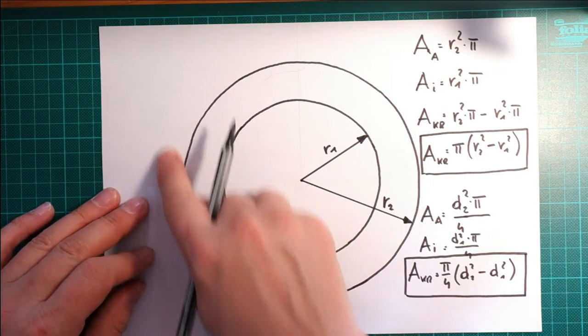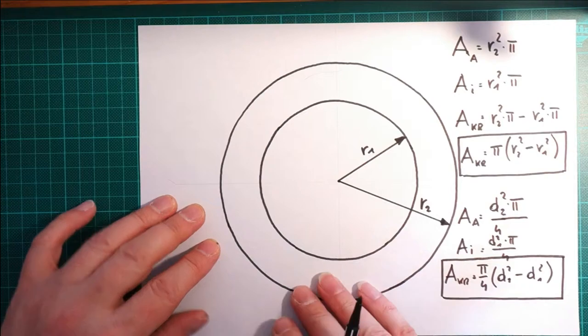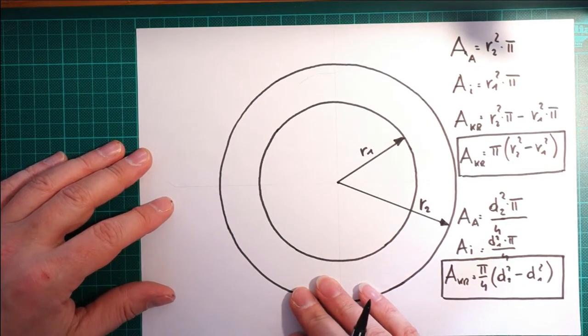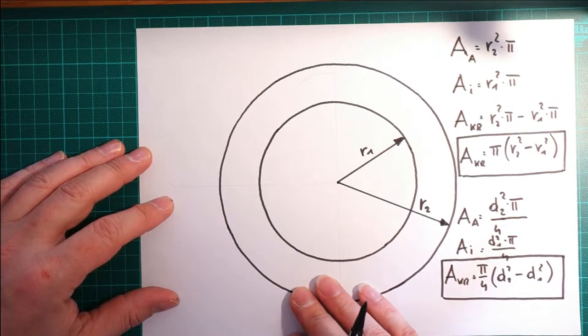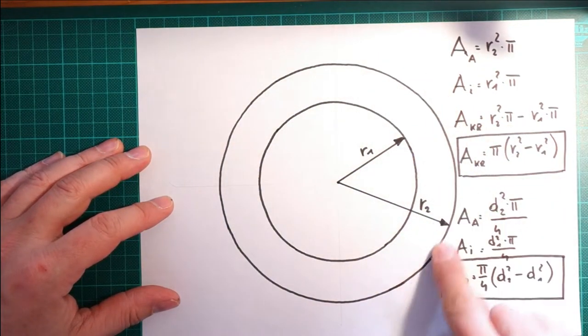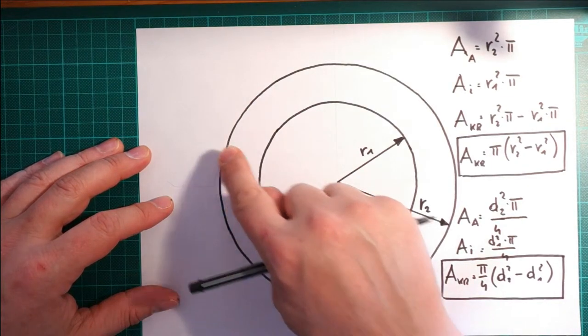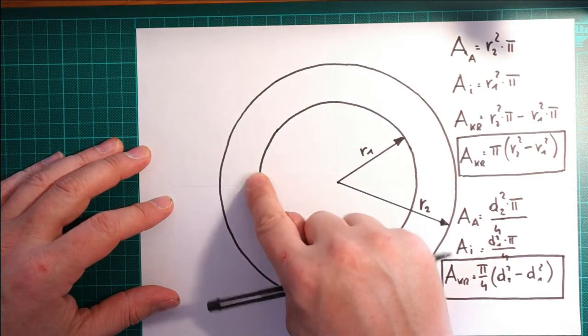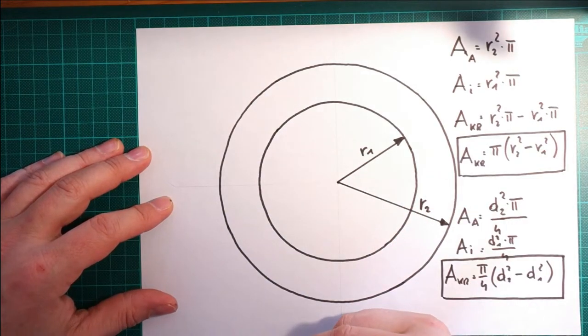Jetzt habe ich da so viel leeren Platz. Da könnte ich doch glatt den Umfang vom Kreisring mir ausrechnen. Und den Umfang kriege ich ja immer, wenn ich so einmal um und um gehe. Also ich habe da den Umfang des äußeren Kreises und den Umfang des inneren Kreises. Und das sagt es ja schon mit dem und dazwischen. Ich muss die zusammenzählen.